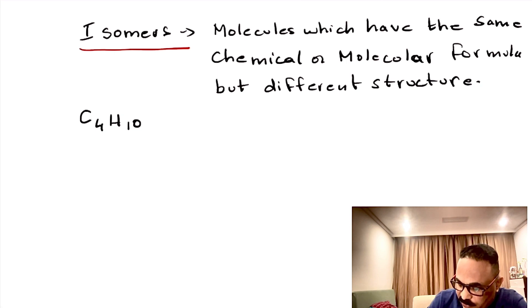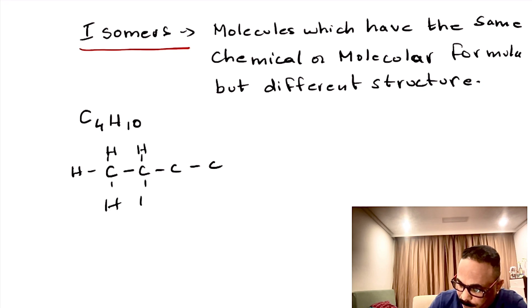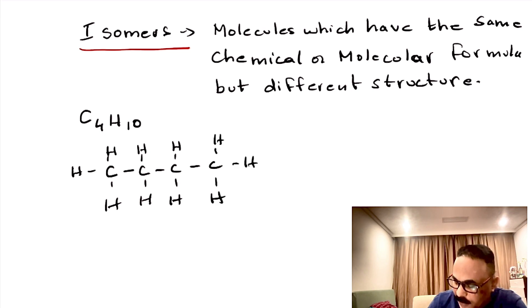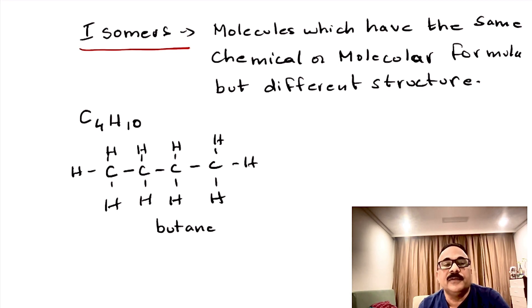Let us draw the structure of butane: 1, 2, 3, 4 carbons, and then attach the hydrogens. This is a straight chain and we can just call it as butane. This is the first isomer of butane. Let us do the second one.